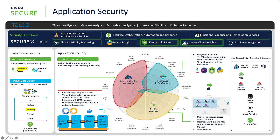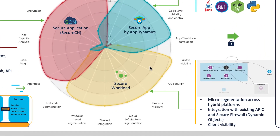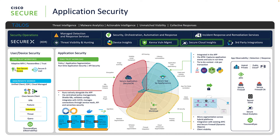Secure Workload — which is at the bottom here, formerly called Tetration — is a robust solution that provides micro-segmentation across private, public, and hybrid clouds. It provides consistent protection regardless of which platform you use: AWS, Azure, Google, and others. It automatically generates whitelist-based policies and keeps them up to date based on your application behavior, so you can have consistent policy enforcement across on-prem and cloud without having to understand how to create those policies on different platforms.